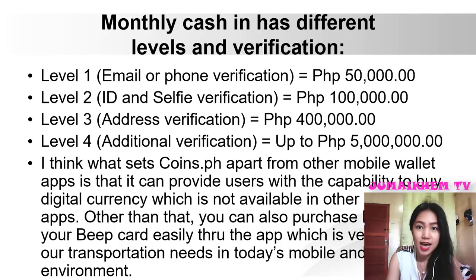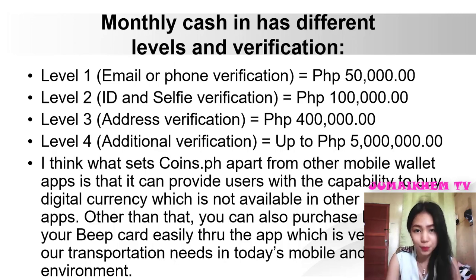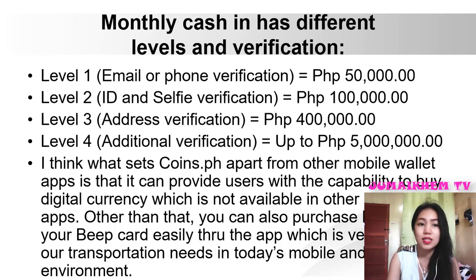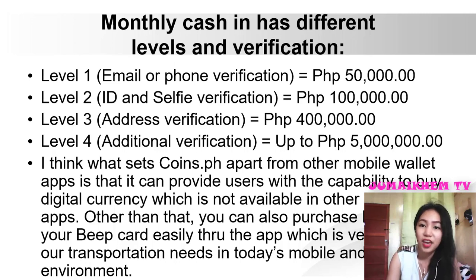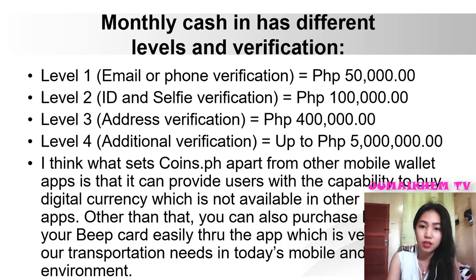Monthly cash-in has different levels and verification. Level 1: Email or phone verification — 50,000 pesos. Level 2: ID and selfie verification — 100,000 pesos. Level 3: Address verification — 400,000 pesos. Level 4: Additional verification — 5 million pesos.